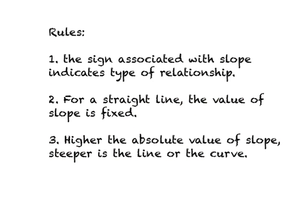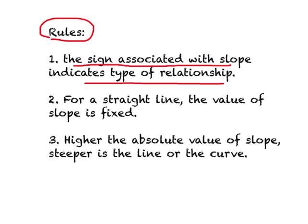Now we have used the mathematical concept of slope, and here are some rules you should remember that will make life easier. Number one: the sign associated with the slope indicates the type of relationship. If you get a positive value of slope, this indicates a positive relationship — meaning as we increase the value of one variable, the value of the other will increase as well. If we decrease the value of one variable, the value of the other will decrease as well.